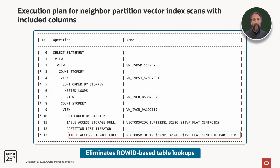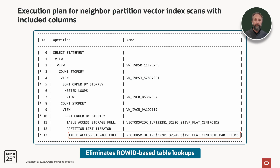Looking at the explain plan again, we can now see a more efficient explain plan doing all of the work using AI smart scan — that table access storage full on the bottom row — eliminating row ID-based table lookups of the base table.